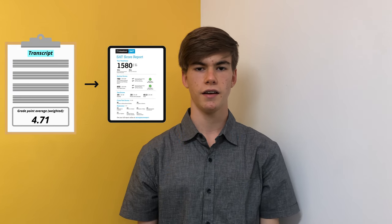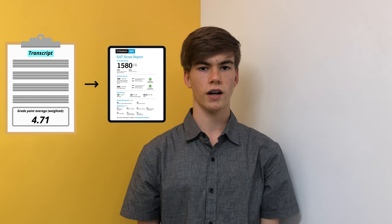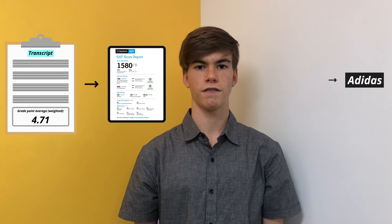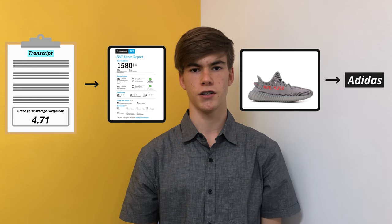Supervised learning is where a machine learns with the help of labels, which are the correct answers. Think of it as learning through being corrected by a teacher whenever you make mistakes. A supervised learning algorithm could predict a number, like SAT scores based on GPA, or a class, like shoe brand from a picture of a shoe.